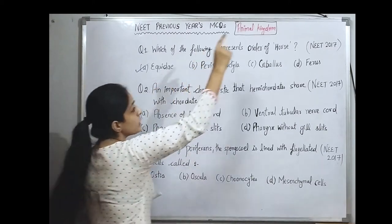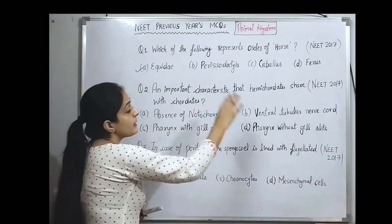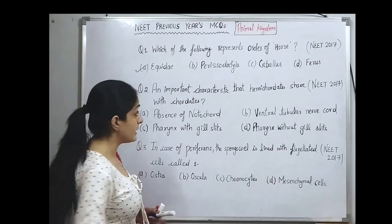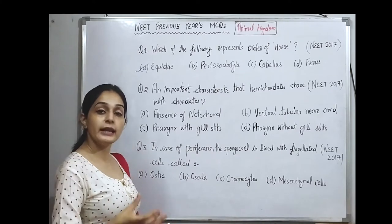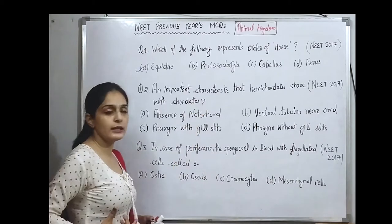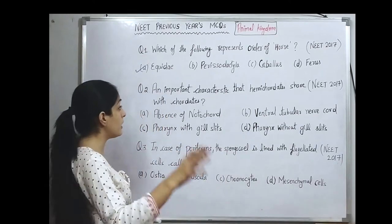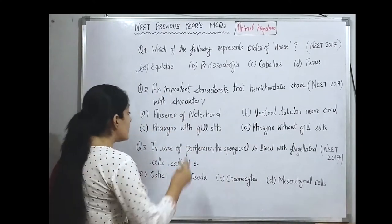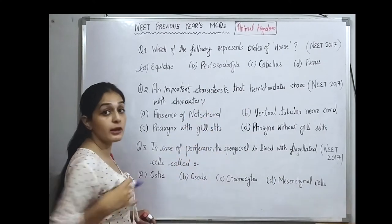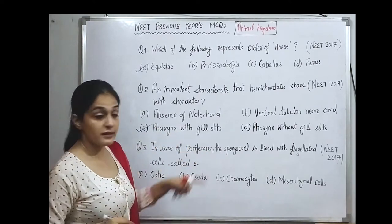The next question, which appeared in 2017, is: what is an important characteristic that hemichordates share with chordates? Hemichordates were earlier placed alongside chordates, but later given their own phylum — phylum Hemichordata. The correct answer is pharynx with gill slits. Hemichordates respire with the help of gills. So the correct option is pharynx with gills.